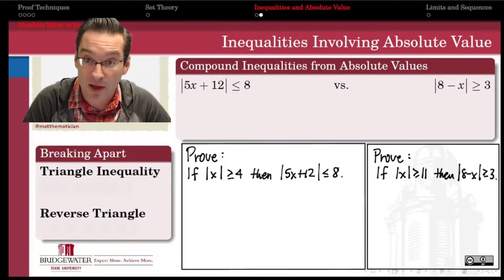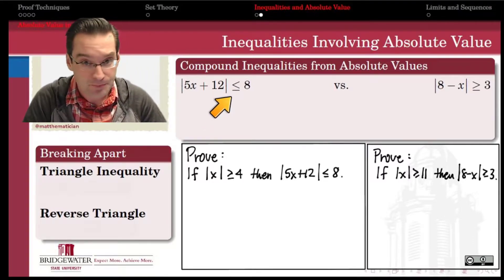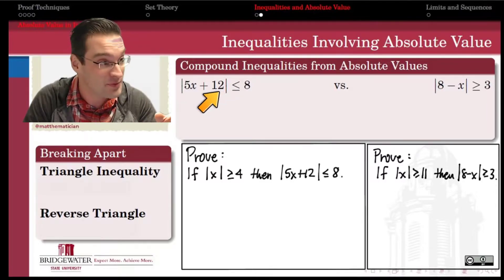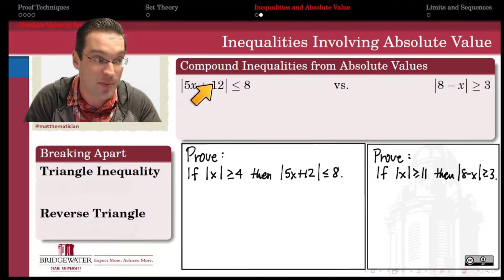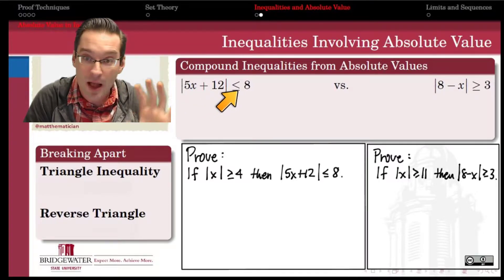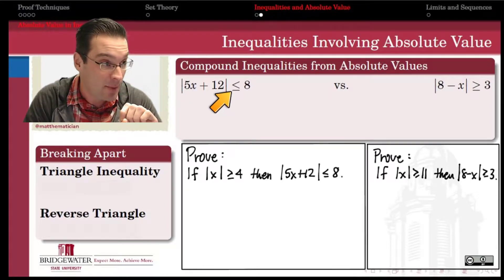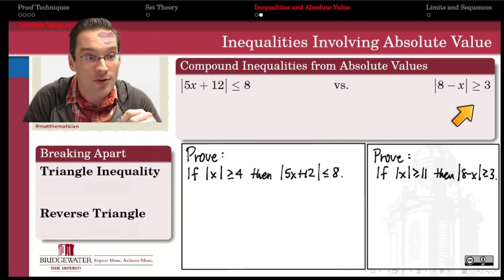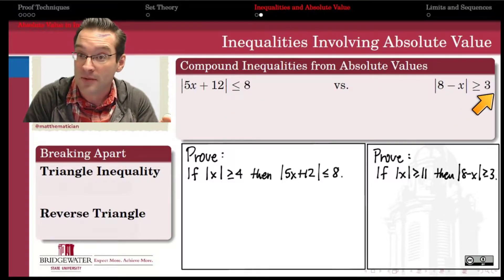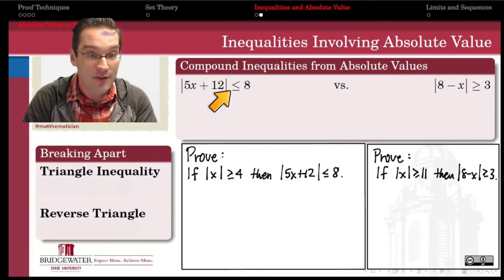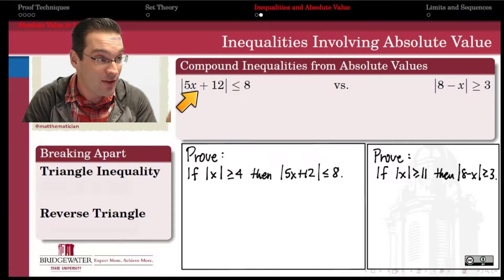How do we solve an inequality that has an absolute value in it? First, the absolute value must be by itself on one side — make sure it gets isolated before doing anything else. There are two different logical consequences: when an absolute value is bounded from above, like less than or equal to 8, versus bounded from below, like greater than or equal to 3. Because an absolute value measures distance, the statement on the left says the distance between 5x and negative 12 is bounded from above by 8 — so 5x is no more than 8 units away from negative 12.